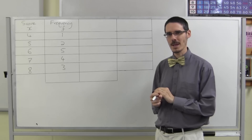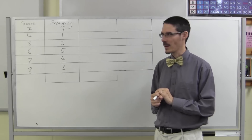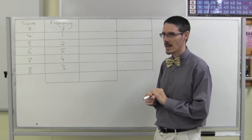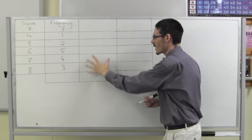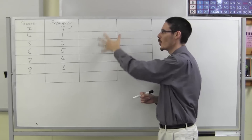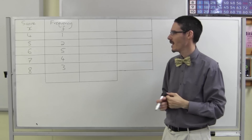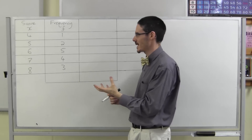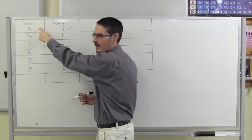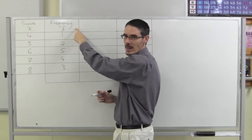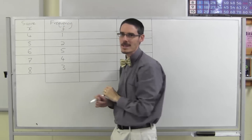So now you want to find the mean, the median, and the mode of data in a frequency table. I have my frequency table. Scores — x is the accepted letter for scores — and frequency — f is the normal accepted letter for frequency. Don't worry too much about the extra columns I've added; I'm going to need them.